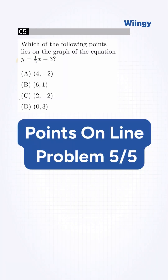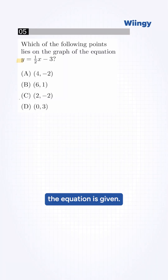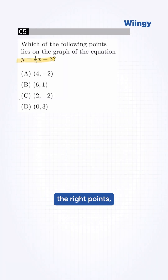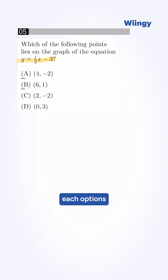Don't graph the line — just substitute the points instead. Here the equation is given and we need to find the right points. So we substitute each of the options into our equation.